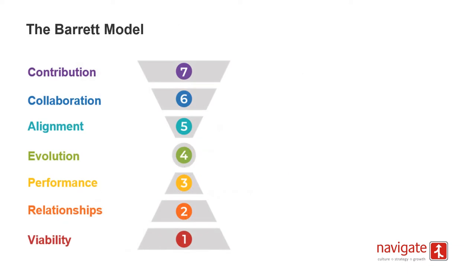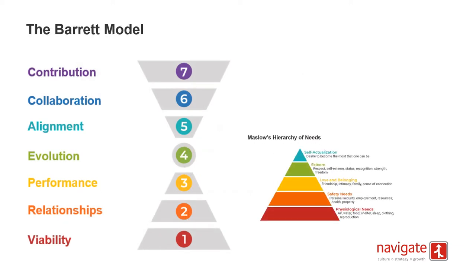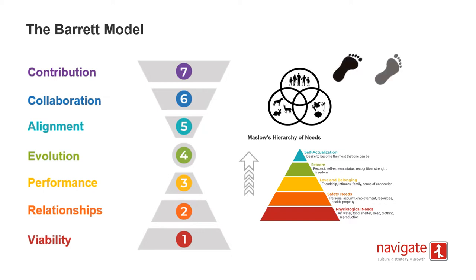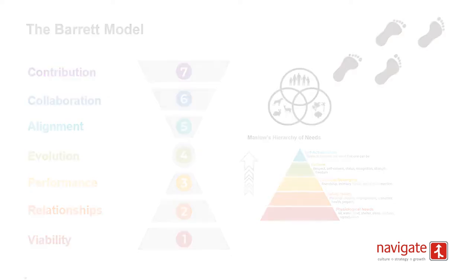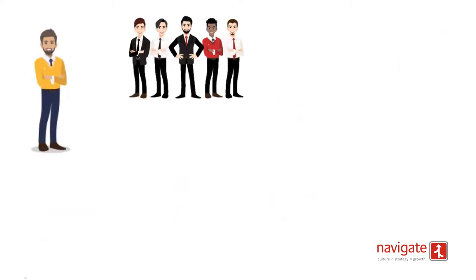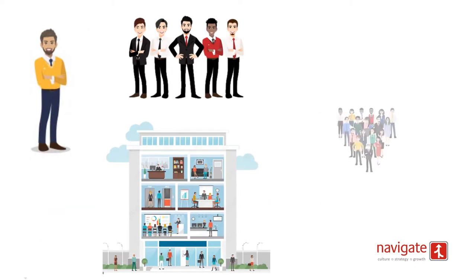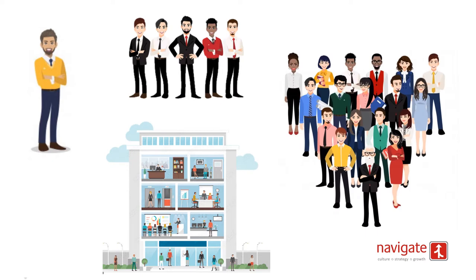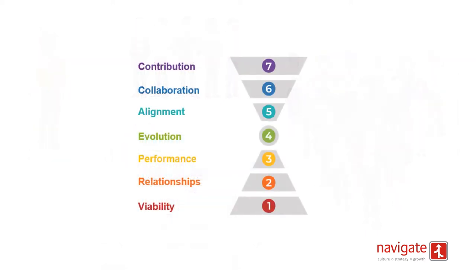The model is grounded in the work of Abraham Maslow's Hierarchy of Needs. Maslow's model describes a pattern through which human motivations generally move — whether it's an individual, a team or an organisation. When we think of the group as a single unit, the same theory applies. Similar to Maslow, the Barrett model describes a pattern through which organisational motivations generally move.